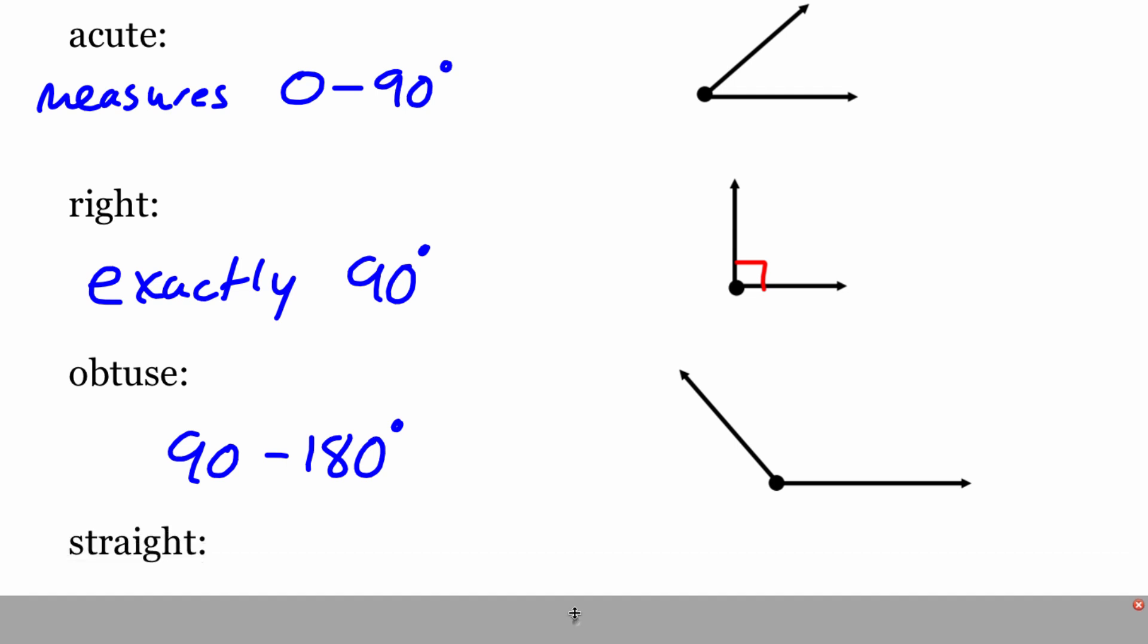And then as far as the angles that we're dealing with, our last type of angle, or the biggest angle that we're going to be dealing with, is something called a straight angle. And a straight angle's measure is exactly 180 degrees.